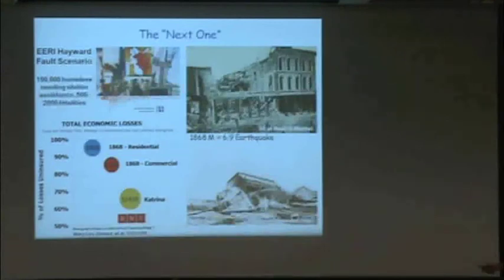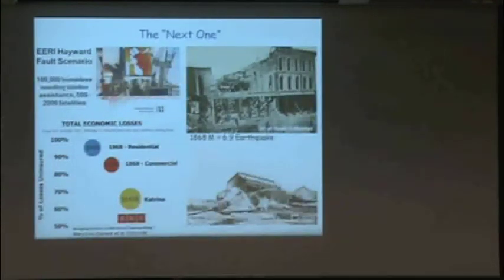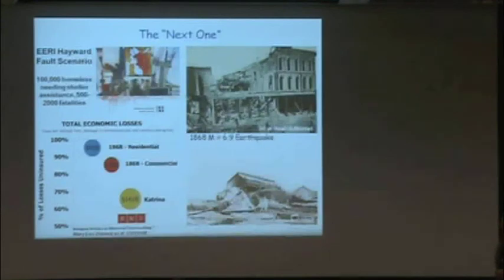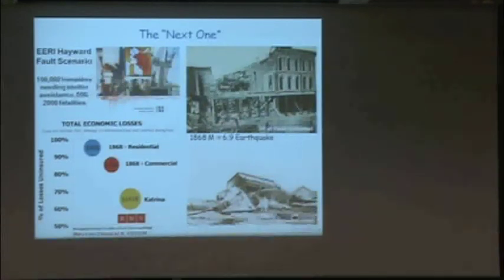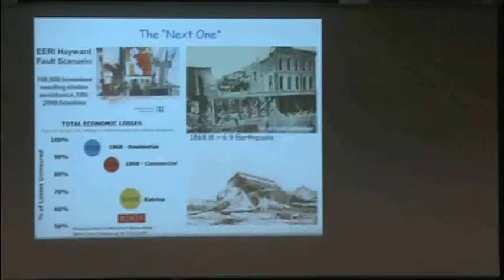If we have an 1868-like earthquake, we expect about $9 billion in residential damage and around $75 billion in commercial damage. Most of these losses are uninsured because after Northridge, the insurance companies bailed. The probabilities are good enough that this is going to happen to us.